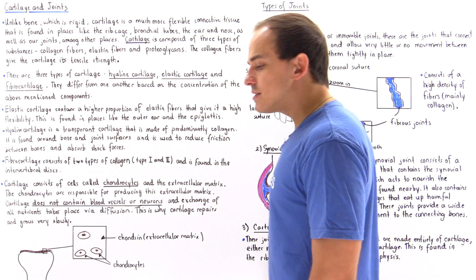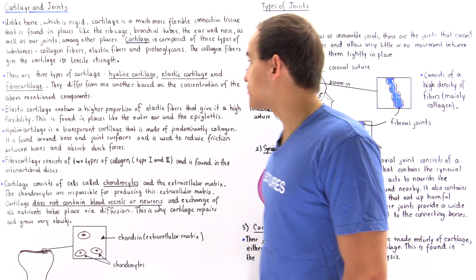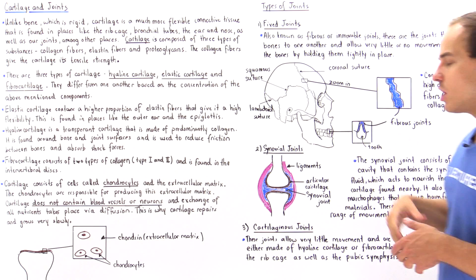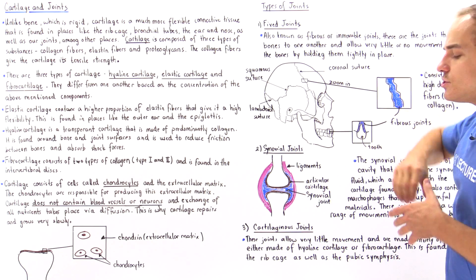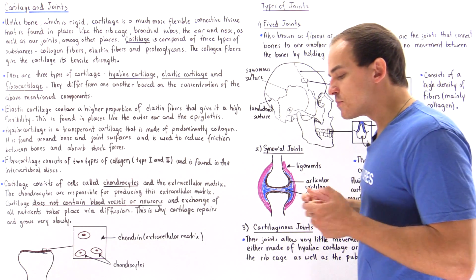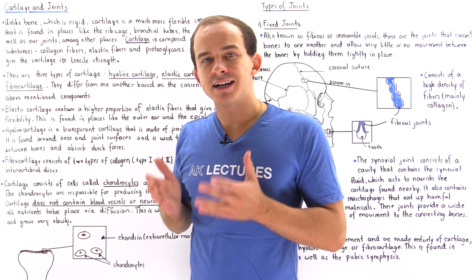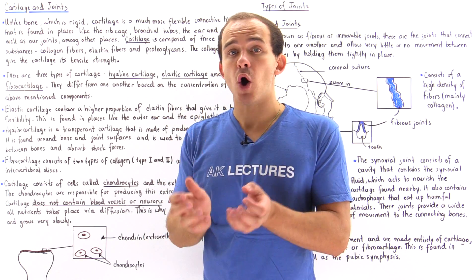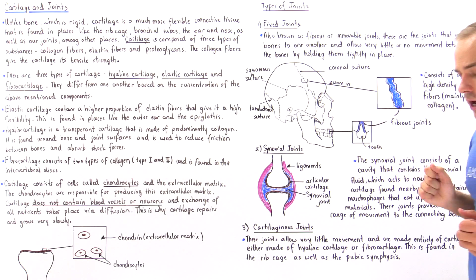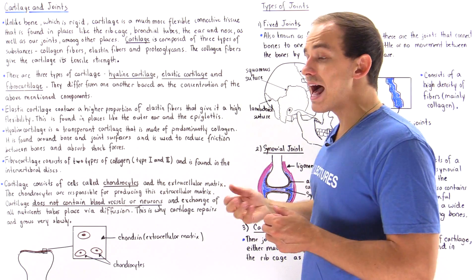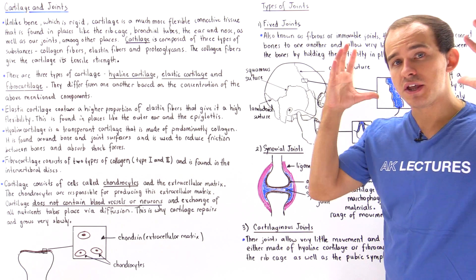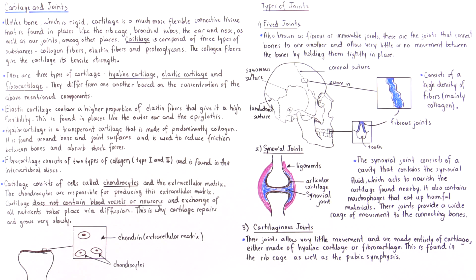Now let's move on to the three types of joints: fixed joints, synovial joints, and cartilaginous joints. The fixed joints are also known as immovable or fibrous joints. These joints connect our bones and hold them very strongly and tightly, allowing no movement between the bones. Fibrous joints are found in the skull as well as around our teeth.